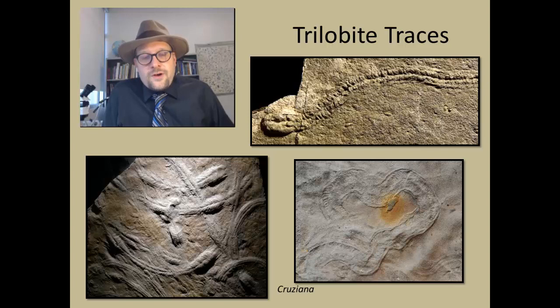One last thing before I sign off about trilobites is that they leave behind wonderful traces in the fossil record, and many of these traces have been documented throughout the Paleozoic. This is a trace fossil that is very characteristic—it's called Cruziana. Now Cruziana can be recognized because you see all of those little individual legs digging around, scuttling around in the sediment.